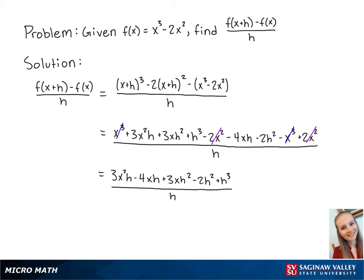Since we have h's on the top and the bottom, these will cancel out so that we are left with 3x squared minus 4x plus 3x h minus 2h plus h squared. And this is the final answer.